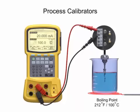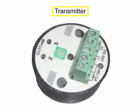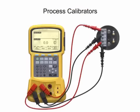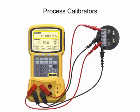After the sensor accuracy is confirmed, the next step is verifying the accuracy using the process calibrator. The calibrator provides an input signal to the transmitter that simulates the output of the sensor at multiple measurement points.